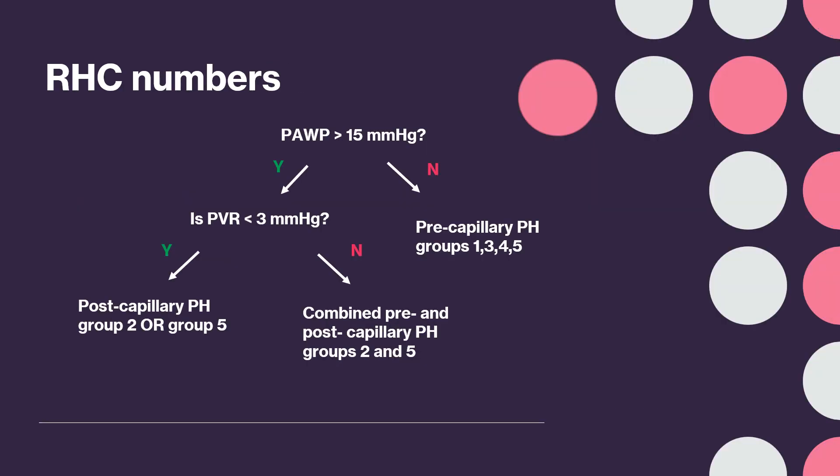Once you have done the right heart cath and have your results, if the mean pulmonary arterial pressure is greater than 20, you have some form of pulmonary hypertension — you just need to determine which form in particular.